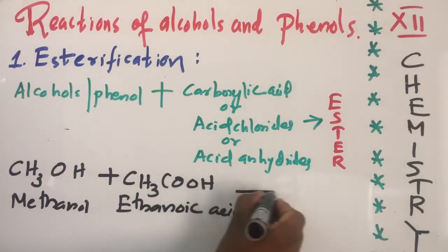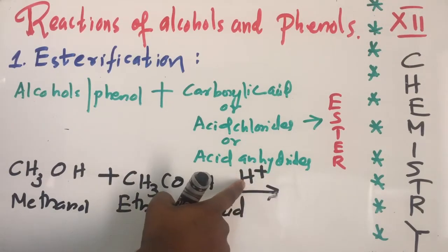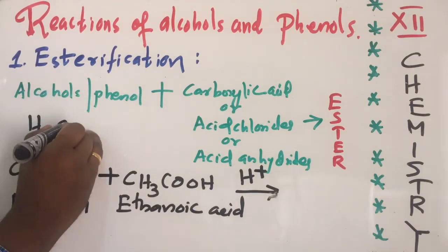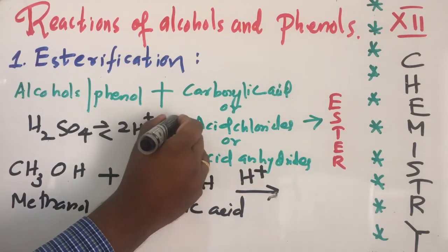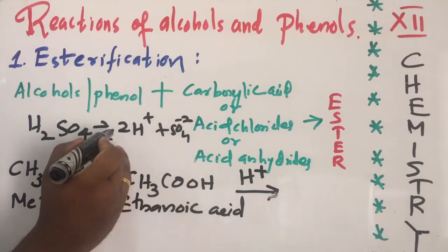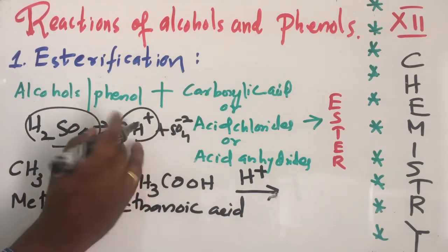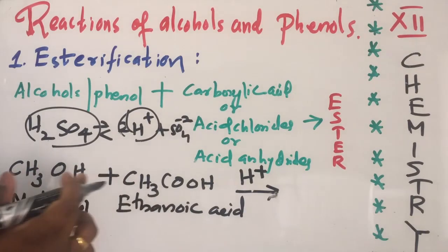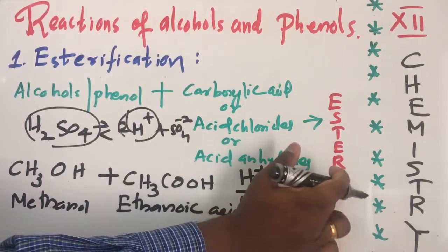In the presence of a mineral acid — sulfuric acid — represented as H⁺. H⁺ is formed from sulfuric acid: H2SO4 dissociates to form 2H⁺ + SO4²⁻. So we can represent sulfuric acid either by using H⁺ or H2SO4. In the presence of H⁺, alcohol and ethanoic acid combine to form an ester.